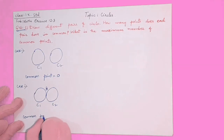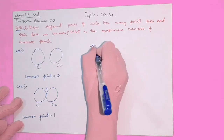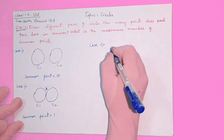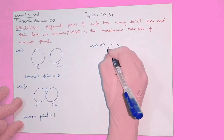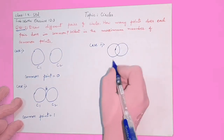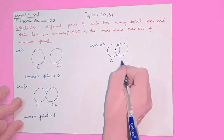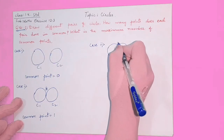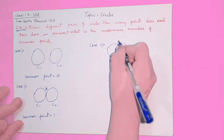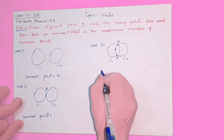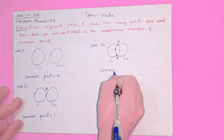If you take circles where one circle is inside the other — like in Venn diagrams in sets — with C1 and C2 intersecting, they have two common points, which we can call A and B. So the common points here are two.